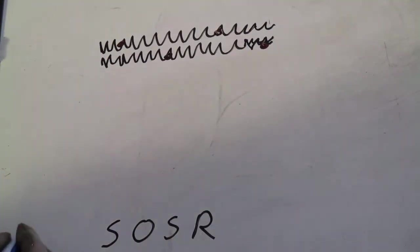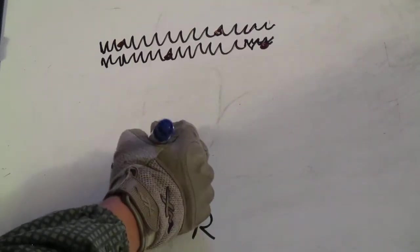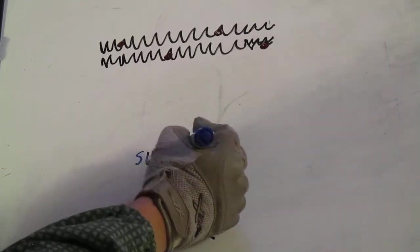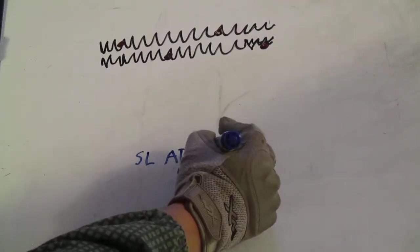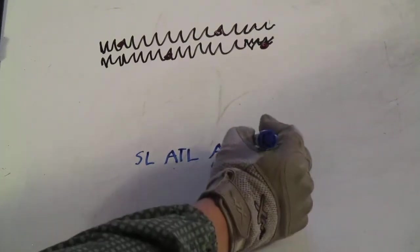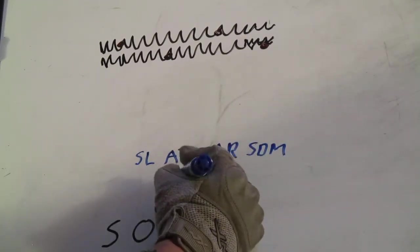All we will need for this is the alpha team, our primary breach team. So we will have our squad leader, the assistant team leader, the automatic rifleman, squad designated marksman, and the rifleman.